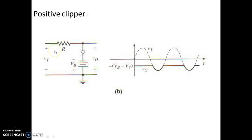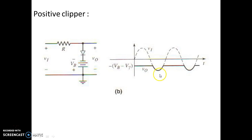During the negative half cycle, until the negative input is less than the applied biasing voltage, the diode remains forward biased. When the input voltage is more positive than this biasing voltage, the cathode becomes positive, and as a result the diode becomes reverse biased. When the diode is reverse biased, the resistance offered by this loop is high, and as a result we will get output waveforms as shown in the graph.